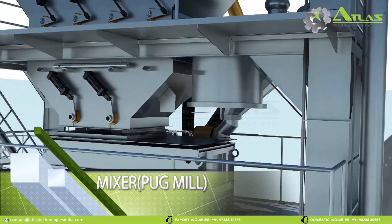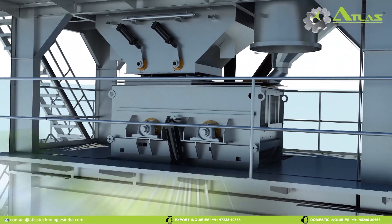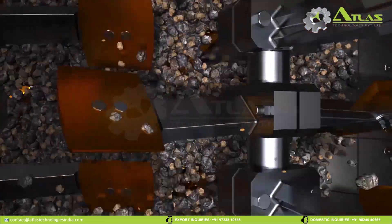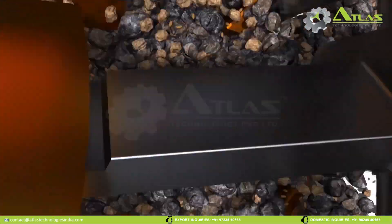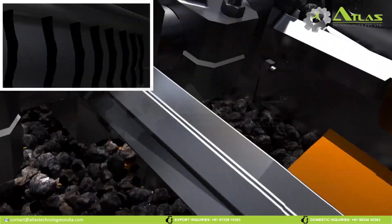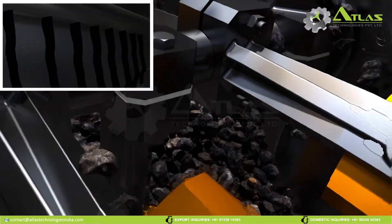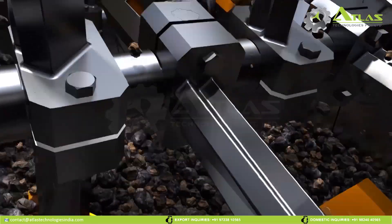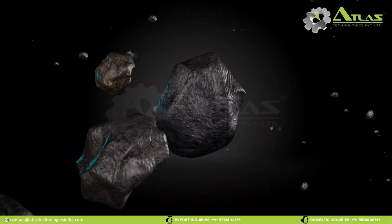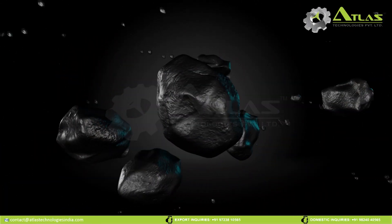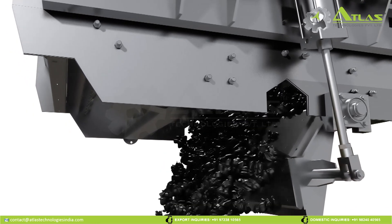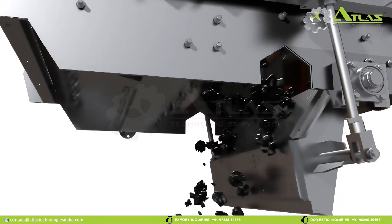Mixer. The special configuration of the agitating arms ensures thorough blending giving a homogenous mixture within the shortest possible time. The powerful mixing forces ensure that the minerals free surfaces are rapidly and evenly encased in a layer of bitumen. The asphalt mixture is now ready to load and it is emptied completely via the mixer door.